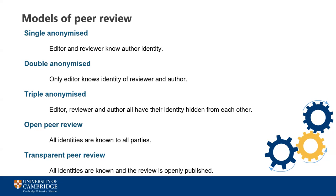Under double anonymized review, neither the author nor the reviewer know the identity of the other, but the journal editor will know the identity of both. This helps to protect against any potential bias and still gives the reviewer the ability to be honest in their comments. However, there may still be some identifying elements in the paper, which means the reviewer can guess who the author is, which may then result in bias. Some also argue that it benefits the reviewer to know who the author is so that they can make a more informed judgment.